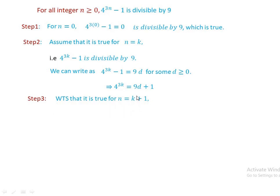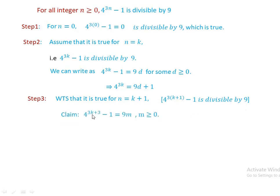Step 3: we want to show that it is true for n equal to k plus 1. That means 4 to the power of 3 times (k plus 1) minus 1, which equals 4 to the power of 3k plus 3 minus 1, is divisible by 9. Our claim becomes: 4 to the power of 3k plus 3 minus 1 is equal to 9 times m for all integers m greater than or equal to 0.